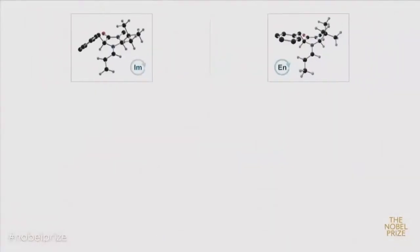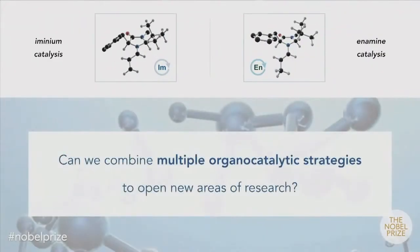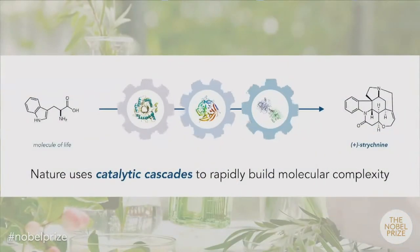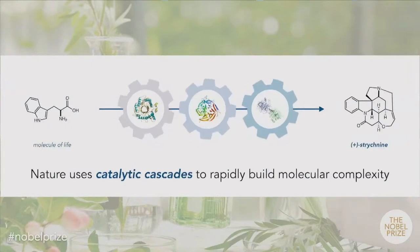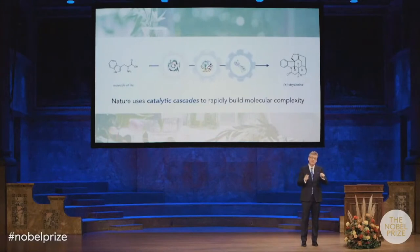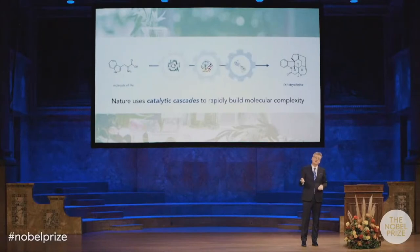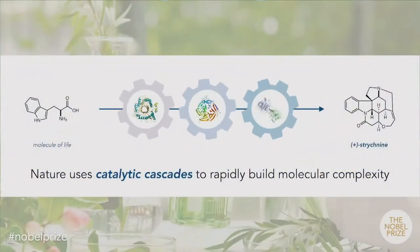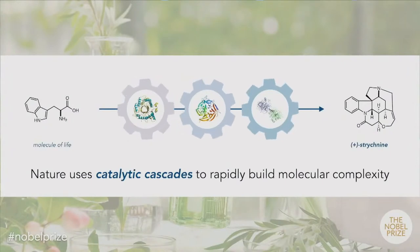At this stage we started to think about what other directions we could take organocatalysis into. One thing we thought of was: wouldn't it be interesting if you could take ammonium and enamine catalysis and put them in the same vessel? We were interested in emulating the way that nature makes molecules. Nature takes enzymes in a biochemical assembly line and in multiple catalytic reactions takes simple molecules and makes very complex ones. We started to ask: could we do exactly the same thing, but instead of using enzymes, could we use small organic molecules to do exactly the same catalytic cascades?